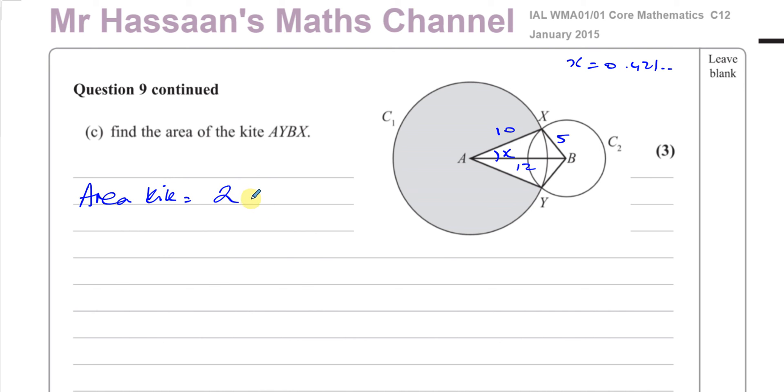If I can find the area of one of the triangles, for example ABX, the area of the kite is 2 times the area of triangle AXB. If I can find the area of one triangle and multiply by two, I get the area of the whole kite because the diagonal cuts it into two congruent triangles. They're exactly the same shape and size.